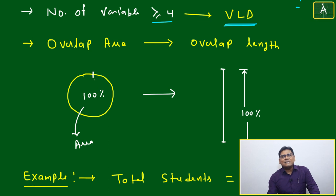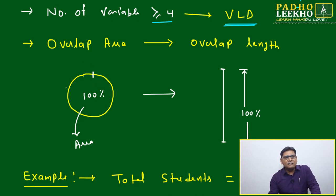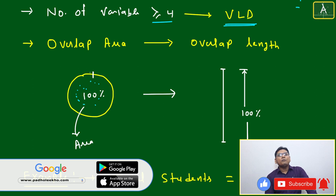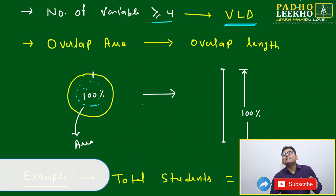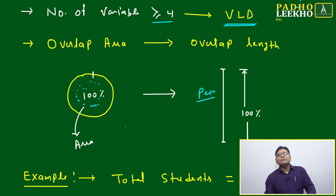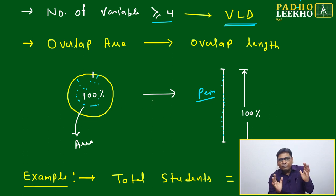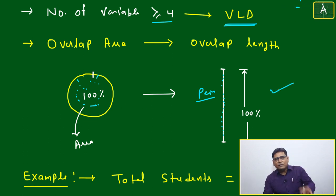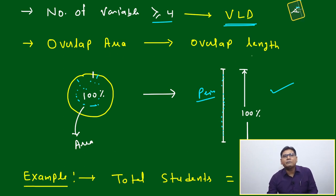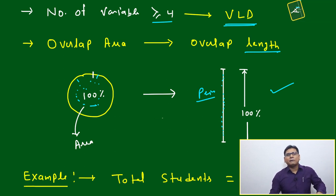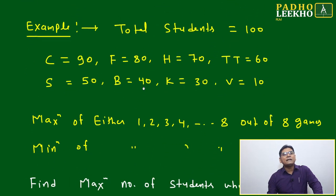Conceptually, VLD works by transforming a circle where all variables are spread across its area into a representation along its perimeter. Variables shift from being represented by area to being represented by length. So instead of overlap area, we now talk about overlap length. This makes it easy to represent five, six, or any number of variables together, and we'll apply an example to understand this.